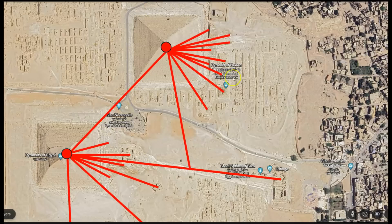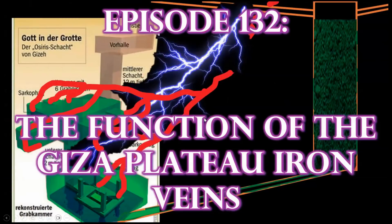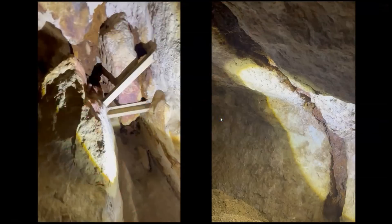In Episode 132 — 'The Function of the Giza Plateau Iron Veins' — I explained how the Giza Plateau was intentionally selected for the construction of this pyramid complex to implement these naturally occurring hydrothermal mineral deposits into the operation of the system, utilizing them to distribute electric current from lightning across the components of the Giza Plateau complex.